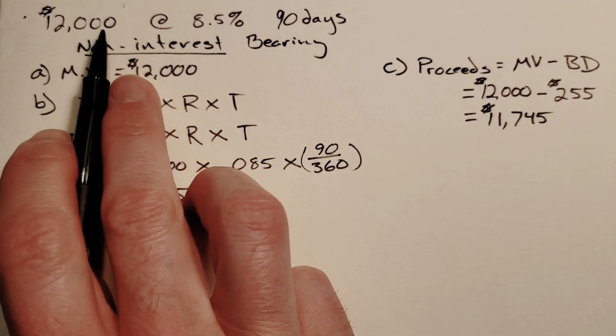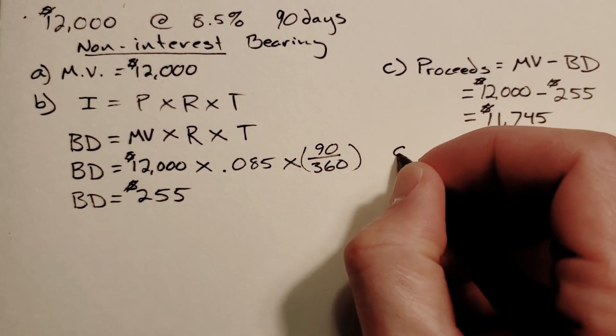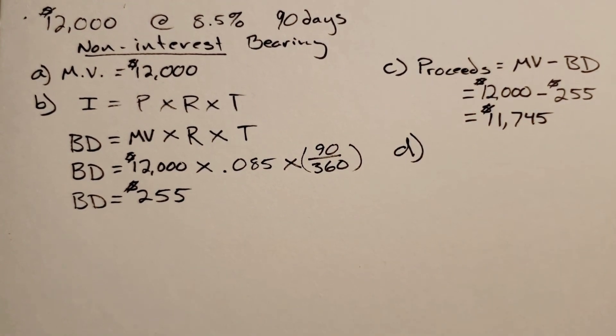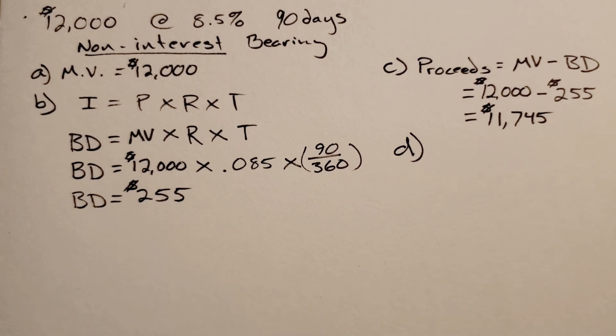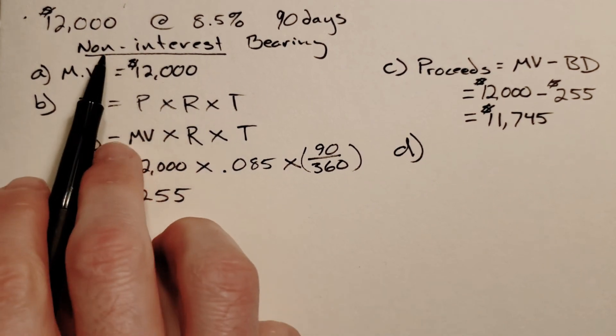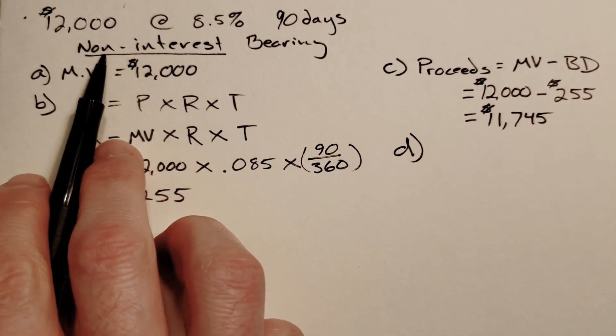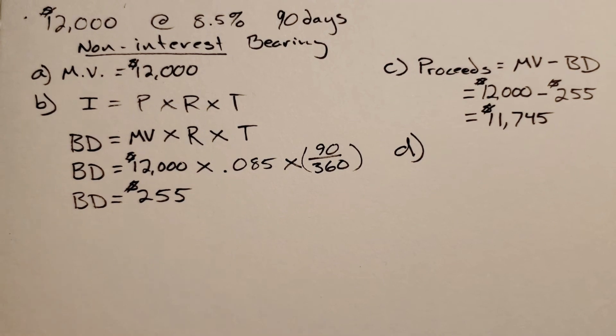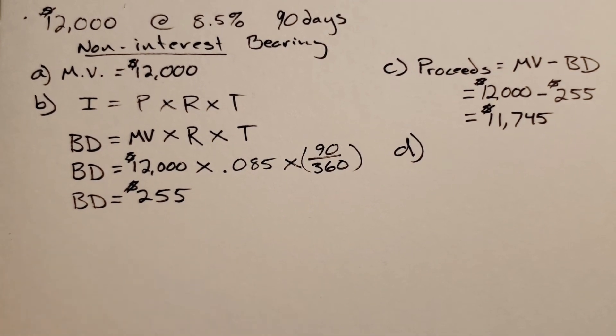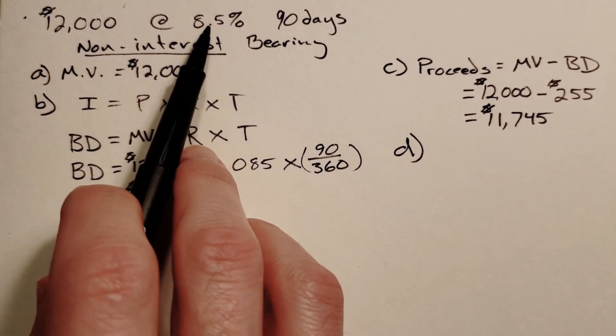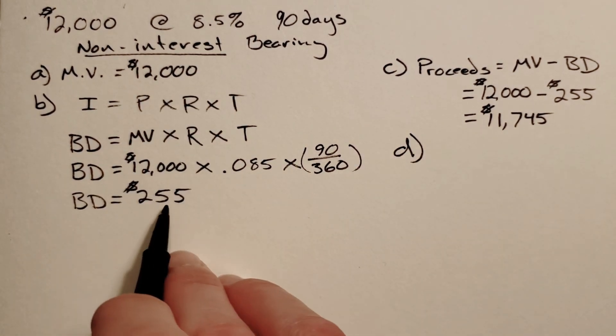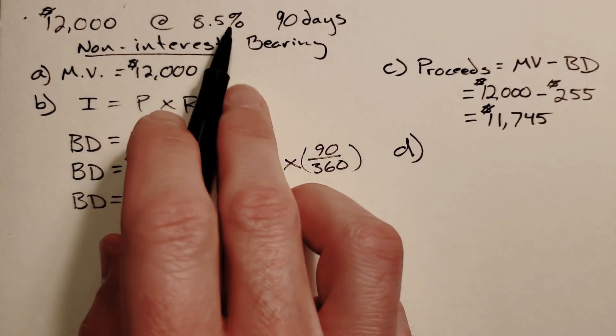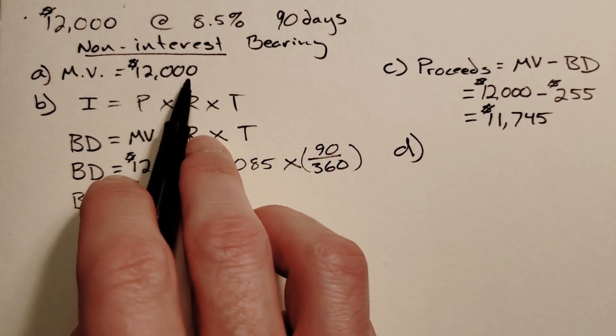Part D is a little confusing but it says what's the effective rate to the nearest hundredth percent. The effective rate is an equivalency rate to what this would be if it was an interest bearing loan. It's basically saying this is what it would be if it was a normal loan, but because it's a special loan you're paying a different rate than what it actually says. $255 is not 8.5% over 90 days of $12,000 like we've been doing for interest bearing.